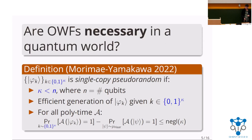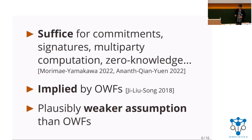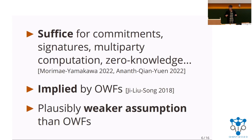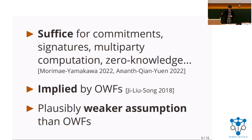We like pseudorandom states for three major reasons. First, as we saw in the previous talk, they suffice for a lot of interesting primitives we care about — things like commitments, signatures, and also things we don't know how to build using only classical one-way functions, like multiparty computation. Second, they are implied by the existence of one-way functions — if you believe quantum secure one-way functions exist, you should believe pseudorandom states exist. Third, there is evidence suggesting these are a plausibly weaker assumption than one-way functions. Whereas one-way functions are known to imply pseudorandom states, we don't know whether the reverse is true.